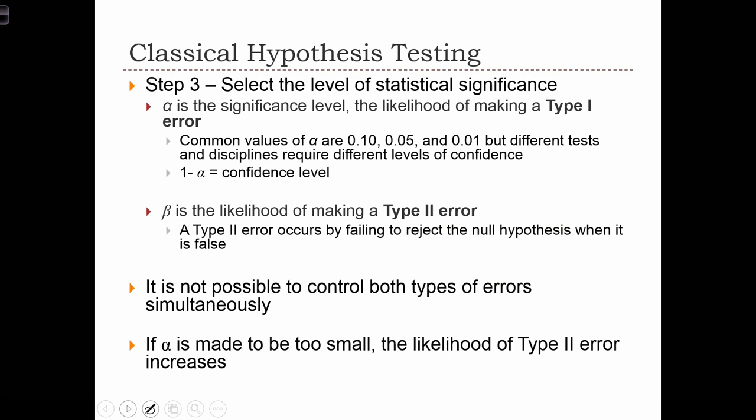Step three is to select the level of statistical significance. Remember, alpha is the significance level, and that's the likelihood of making a type 1 error. Common values of alpha are 10%, 5%, and 1%. But different tests and disciplines require different levels of confidence. Typically, in this course, we'll be dealing with these three levels. Based on those three levels of significance, we can come up with what the confidence level is. We're often going to be asked to provide a solution at a certain level of confidence. In which case, we're going to use 1 minus alpha in order to figure out which level of significance we should use for each level of confidence.